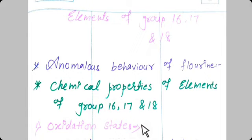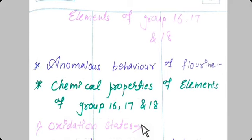The next topic is the oxidation state of group 17 elements. Group 17 elements have a valence shell electronic configuration of NS²NP⁵. The P orbital has 5 electrons, and since P orbital can hold 6 electrons total, group 17 elements gain 1 electron to complete their octet, making the configuration NS²NP⁶. So S orbital is complete with 2 electrons, and P orbital is complete with 6 electrons.